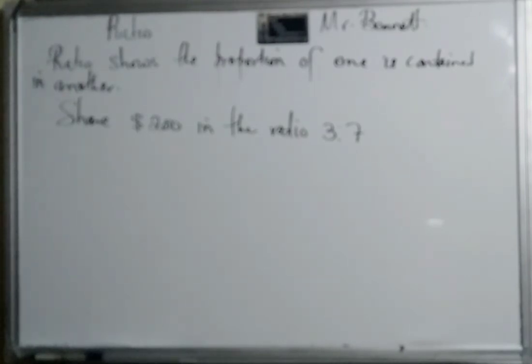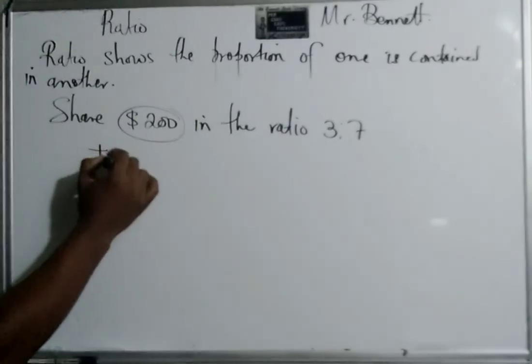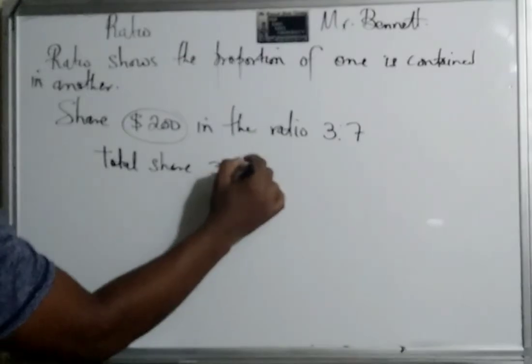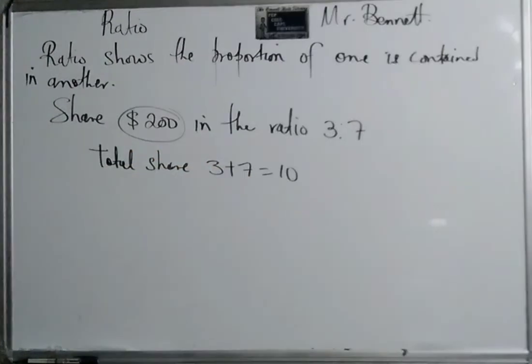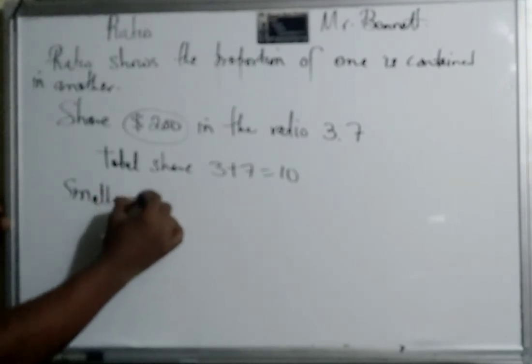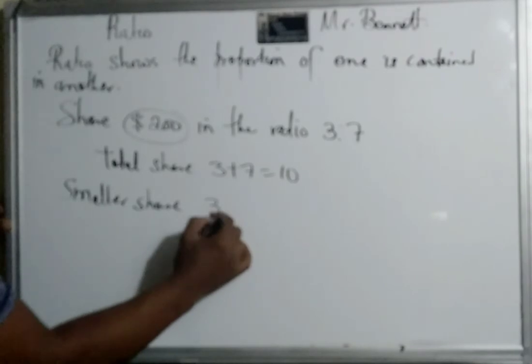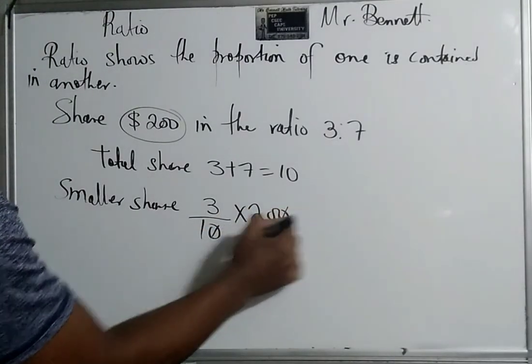And now it's a little bit different, so the numbers are not the same. However, the principle remains the same. So we are to share, so first we need to find out this 200, how many shares are in total. So in all, we say total share would be three plus seven equal to ten shares.